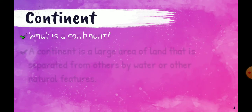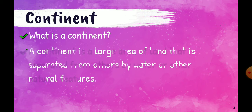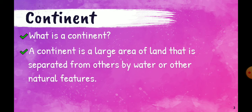The question is: what is a continent? A continent is a large area of land that is separated from others by water or other natural features. Continent kia hota hai? It is a large area of land — ek land ka bahut bada hissa hota hai — that is separated from the others, or doosre hisson se alaida hota hai, by water and other natural features.